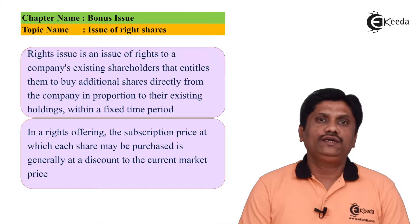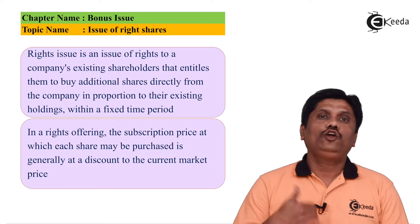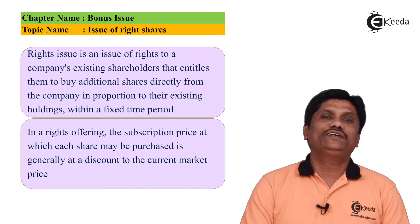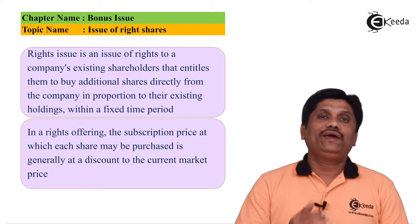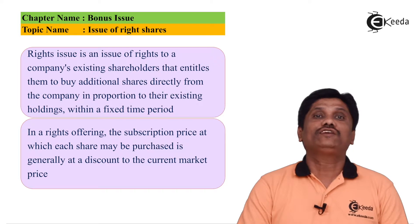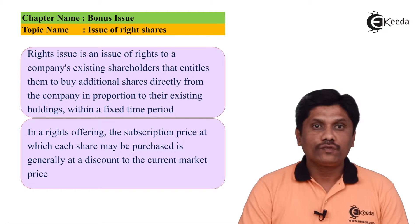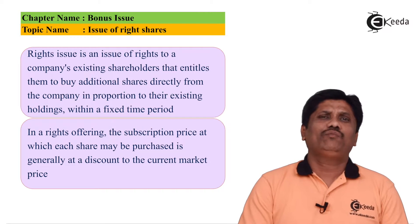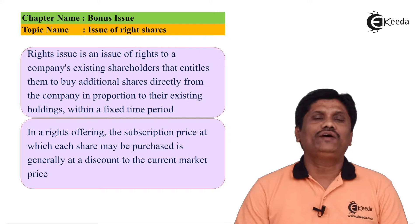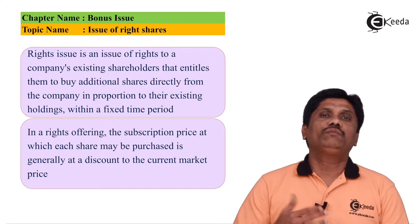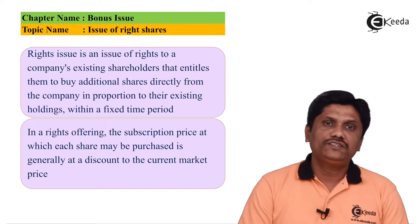Let me tell you one thing — when a company wants to come up with a public issue, first loyalty always goes to the existing shareholder. If I want to raise further capital, main pehle mere existing shareholders ko preference doonga ke aap humare shares khari do. Aur agar unhone na bola toh I can go with the public. It is normal common understanding that when a company comes up with a public issue, it firstly offers to the existing shareholder.